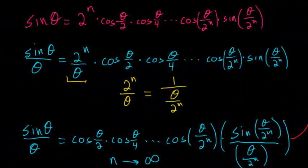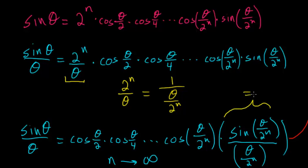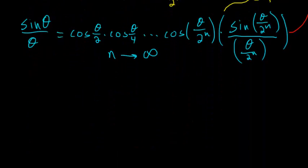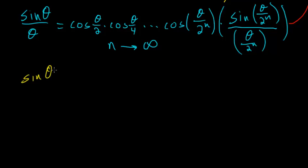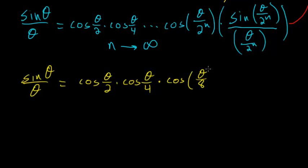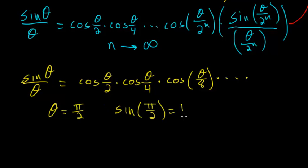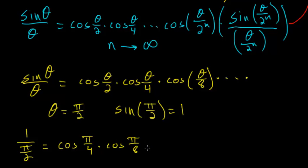Going back to our original equation, since the limit term equals 1 we can essentially ignore it. We conclude that sine of theta divided by theta equals the cosine of theta over 2 times the cosine of theta over 4 times the cosine of theta over 8, and this goes on forever. To get Viète's formula, we evaluate this at theta equal to pi over 2. Since the sine of pi over 2 equals 1, our equation becomes 1 divided by pi over 2 equals the cosine of pi over 4 times the cosine of pi over 8 times the cosine of pi over 16, and so on forever.